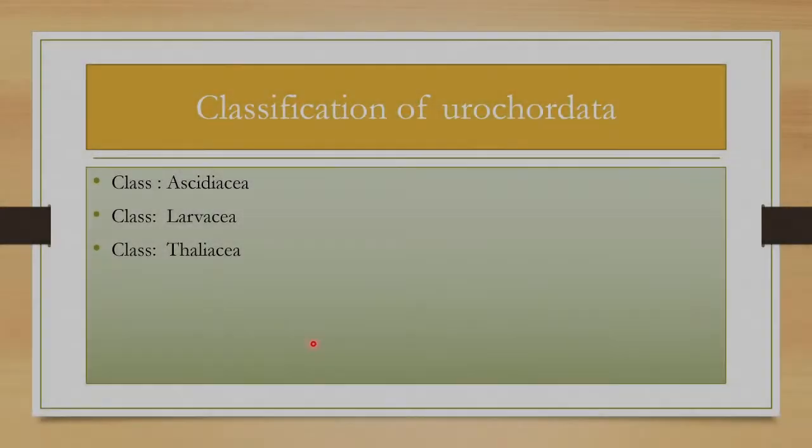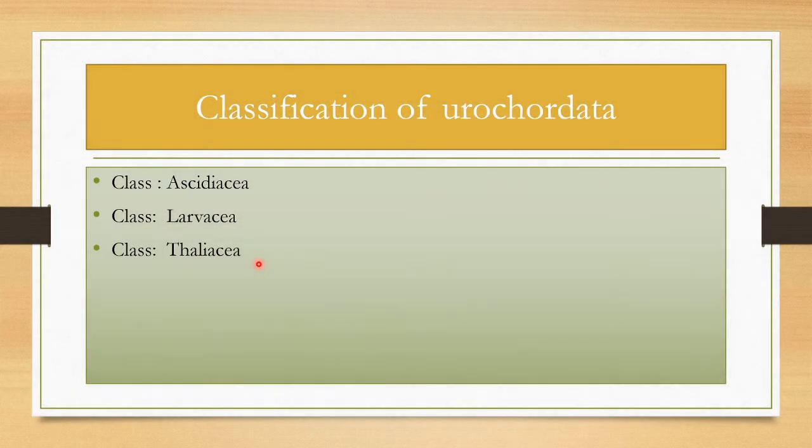Urochordata is classified into Ascidiacea, Larvaceae, and Thaliacea. So three classes are under the subphylum Urochordata.